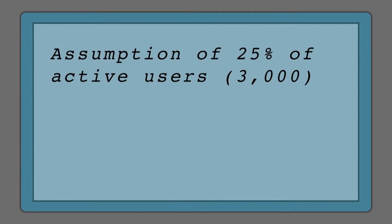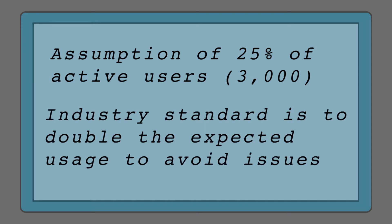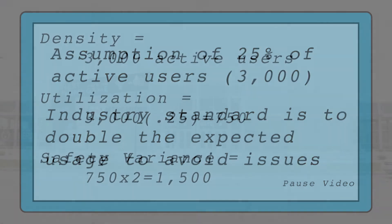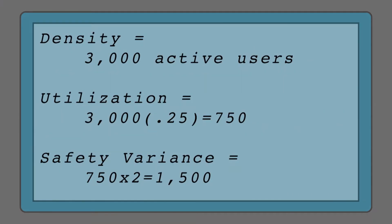The Wi-Fi needs to support basketball games, concerts, and other events throughout the year. The max capacity of this arena is 3,000 guests. Your design needs to accommodate an assumption that 25 percent of the users are active at one time. Industry standard is to double the expected usage to avoid issues. Given the density, 3,000 max capacity, utilization of 25 percent equals 750 people at any one time, with a safety variance of 1,500 people.